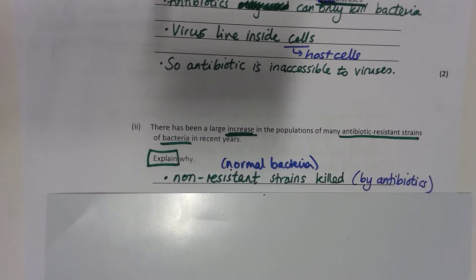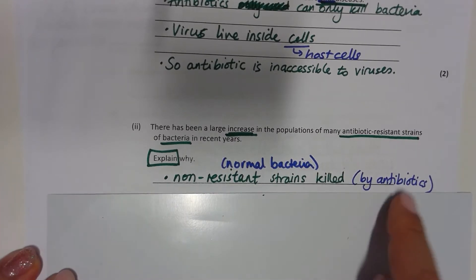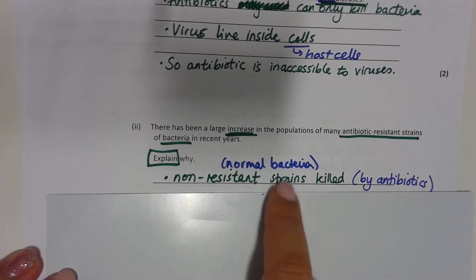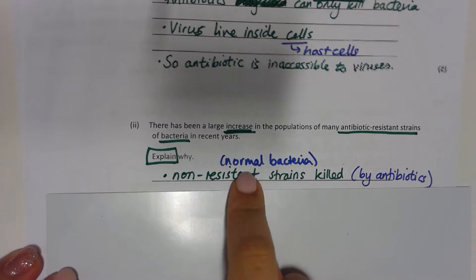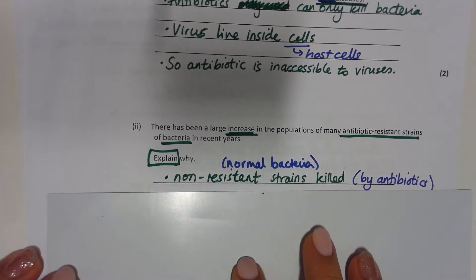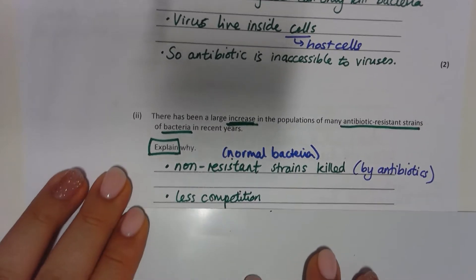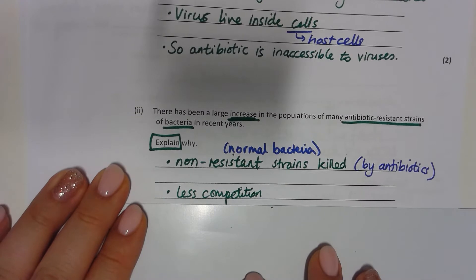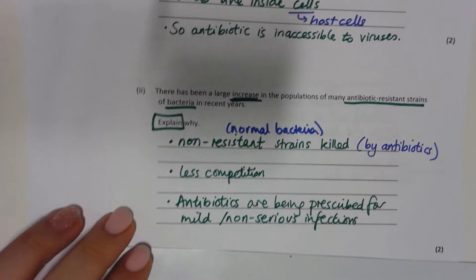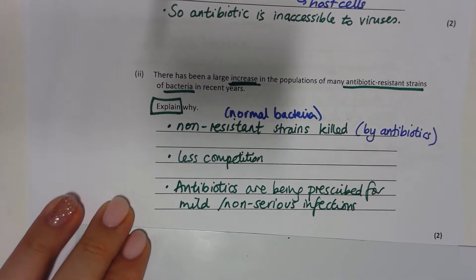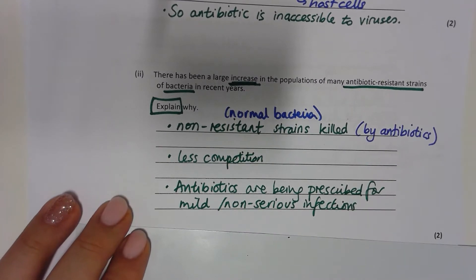There is a large increase in the population of antibiotic-resistant strains. Why? The non-resistant strains are killed by antibiotics — the normal bacteria die. The resistant bacteria survive, and with less competition they are no longer competing against normal bacteria. Also, antibiotics are being prescribed by doctors for mild and non-serious infections.